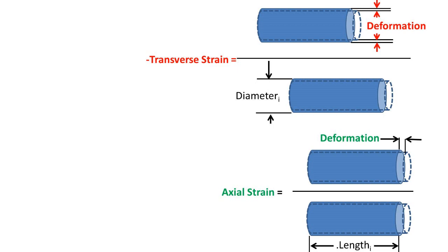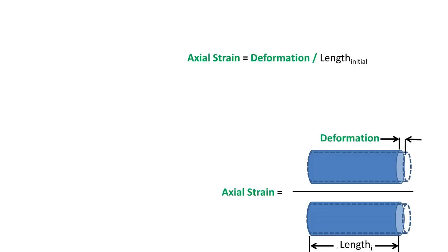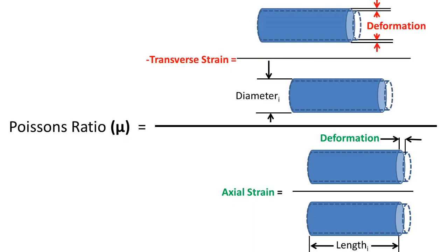Strain is the ratio of the deformation of an object over its original dimension. In the transverse direction, or the direction perpendicular to the force applied, we have that the transverse strain equals the total deformation across the diameter over the original diameter. In the axial direction, or the same direction as the force, we have the deformation in length of the rod over the original length equals the axial strain. So if we divide the transverse strain over the axial strain, we get the Poisson ratio.